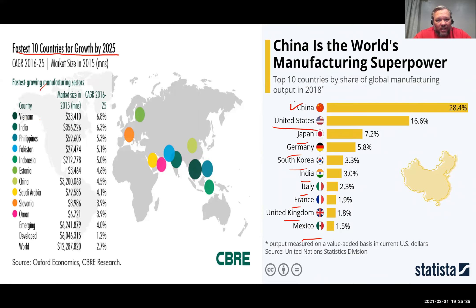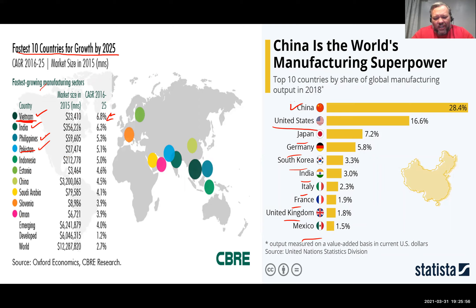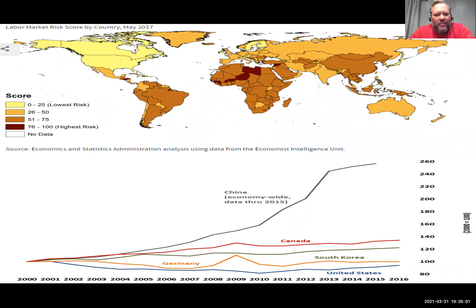Looking at the fastest-growing manufacturing economies projected through 2025, Vietnam and India are growing especially fast. If you look in your closet, you'll increasingly see clothes made in Vietnam, Pakistan, and similar countries. As wages rise in China, manufacturers are moving production to lower-cost locations.